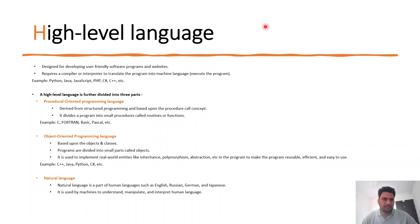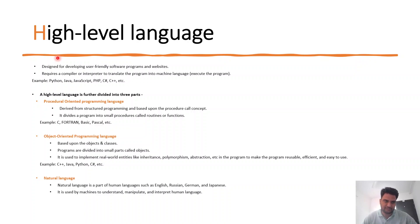Now let's talk about high-level languages. High-level language is broadly divided into three types: procedural-oriented language, object-oriented programming language, and natural languages.